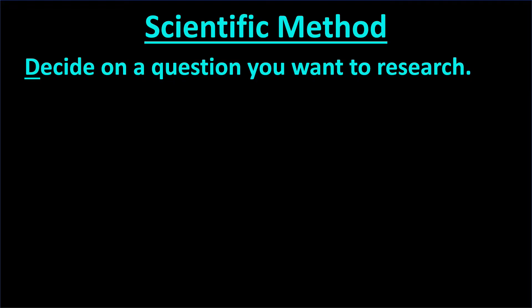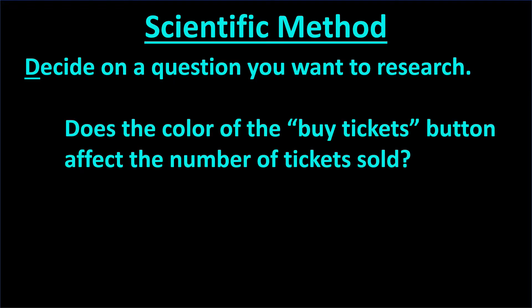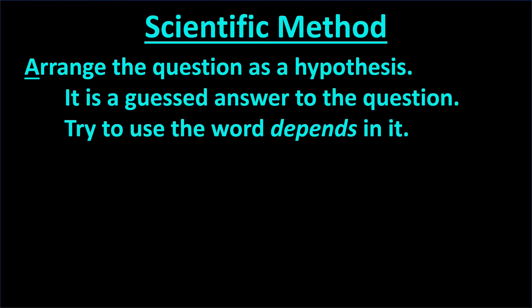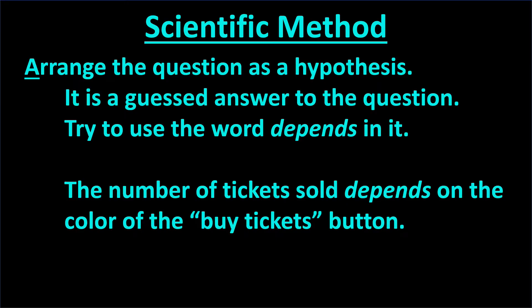The first step in the scientific method is to decide on the question to research. We decide to use this question because it is a yes or no question: Does the color of the buy tickets button affect the number of tickets sold? The second step is to arrange the research question as a hypothesis — the guest answer to the research question. It can help to use the word 'depends' in the hypothesis: The number of tickets sold depends on the color of the buy tickets button. This hypothesis might be false, but that's okay. Our experiment will tell us if the hypothesis is true or false.